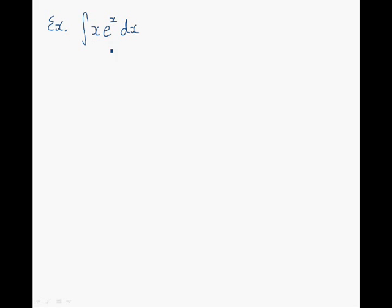We're now going to continue with an example. Here we have the integral of a product of two functions: the first one is x, and the second one is e to the power of x. When we have the integral of a product of two functions, we may be able to find the solution using integration by parts. The first step is to write out u, du, dv, and v. We begin by determining the function equal to u and the function equal to dv. In this case, I'm going to choose x to be equal to u, and e to the power of x times dx to be equal to dv.